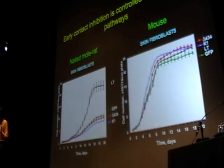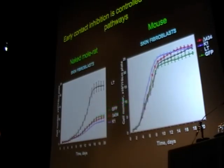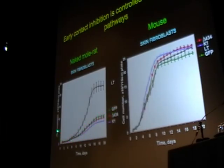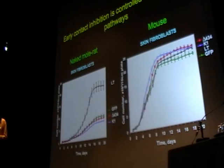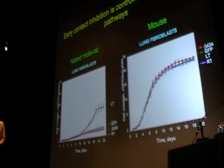In the next step, we transfected naked mole-rat cells with LHT and its mutants and monitored cell density on the plate. GFP was our negative control, and the single mutants inactivating only RB or P53 had no effect on cell density. But look at what happened with LHT — cells started reaching almost the same density as mouse skin fibroblasts. This means we completely abolished the early contact inhibition effect by simultaneously inactivating both P53 and RB. Similar results were obtained with lung fibroblasts.